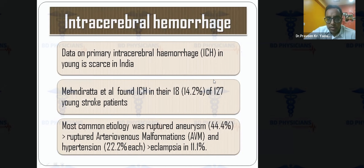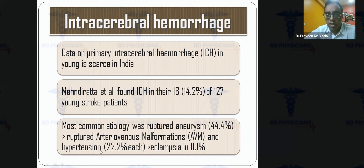Intracranial hemorrhage occurs in approximately 14.2% of young stroke patients. The most common causes are ruptured aneurysm, ruptured AVM, hypertension in the young, and eclampsia, especially during pregnancy.